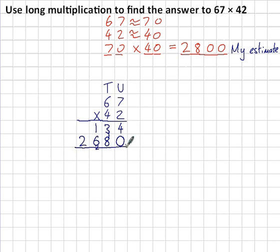We're nearly there now. The final step is to add these two numbers together: 134 plus 2,680. 4 plus 0 is 4, 3 plus 8 is 11, 1 plus 6 plus 1 is 8, and 2 plus nothing is 2. So I make the final answer 2,814. And sure enough, that's very close to my estimate, so I would like to think that I've got the right answer.